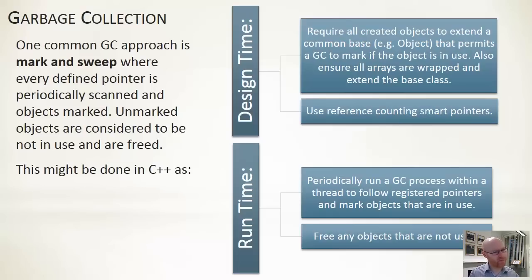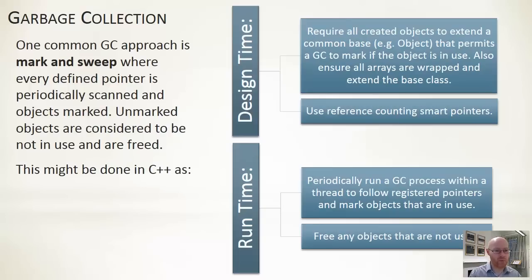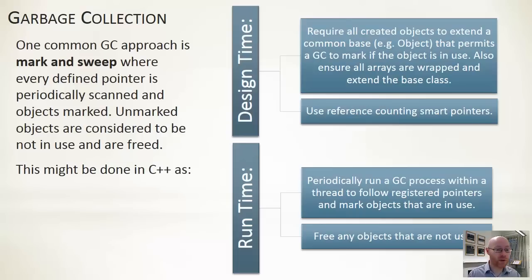Every once in a while — and you decide what that interval means — you run a garbage collection process. You could have this as a background thread or explicitly call it at certain intervals. Within the garbage collection process, we look at all our smart pointers that are registered, and because we're managing the allocation of data as well, we know what objects and areas we have allocated on our heap. We do the marking process, then the sweep process — going through our heap, determining which ones are not marked, freeing up that memory, and then deciding whether to reorganize the heap memory to avoid holes.